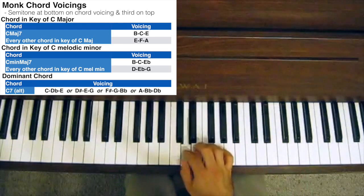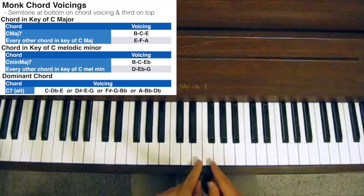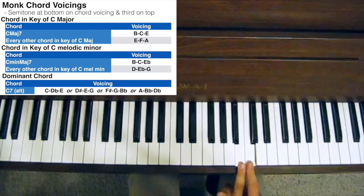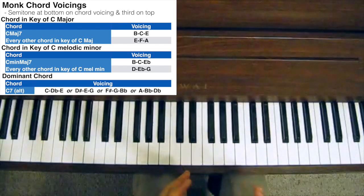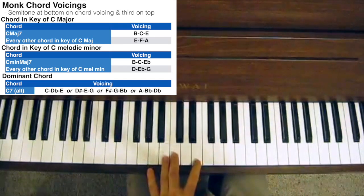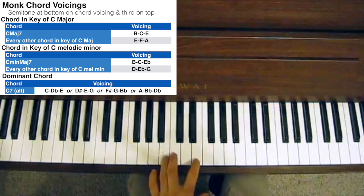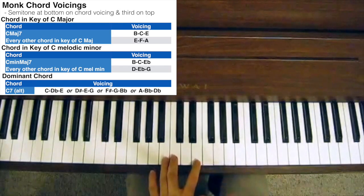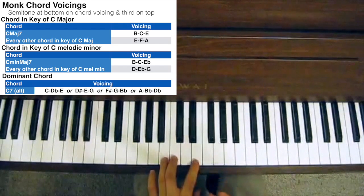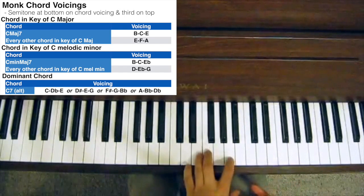If we take the key of C major, we see there are two places where there's a semitone interval between the notes: between the E and the F and between the B and the C. So that means there are only two Thelonious Monk style chord voicings in the key of C major, or in any major key for that matter. This one, and then this one. The first one is used for the root position or the tonic, the C major 7. If he had a chord progression that landed on a C major 7, he'd play something like this. And if he had any other chord in the key of C major, he'd play this.